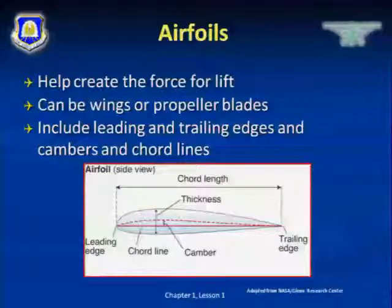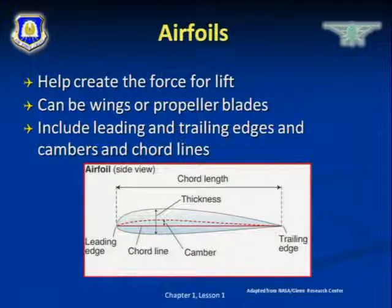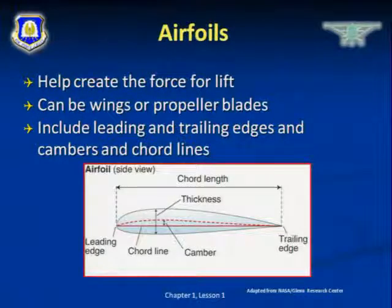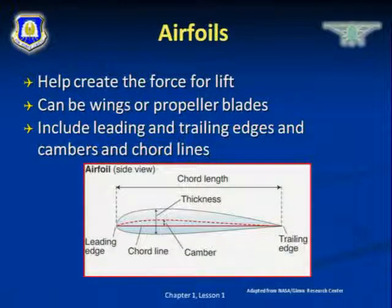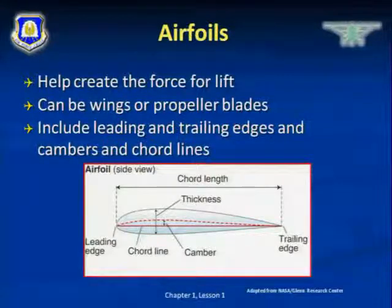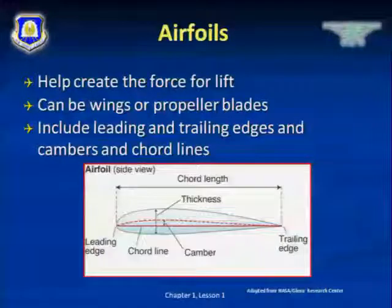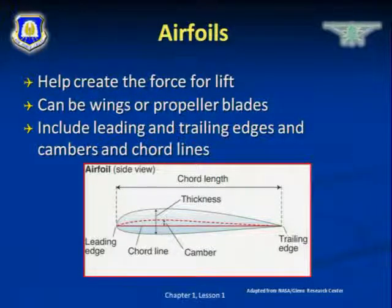Last week we went over some basic terms on page 7 of your book. We talked about the chord and the camber. When I talk about the camber of an airfoil, what does that mean? The curve of an airfoil is its camber — the degree to which the airfoil is curved. What about a chord line? A chord line is a straight line between the foremost and rearmost points of the airfoil. Camber is curved; chord is straight.